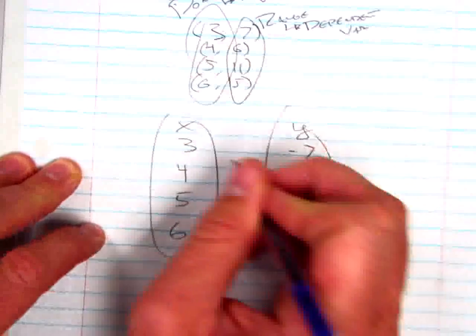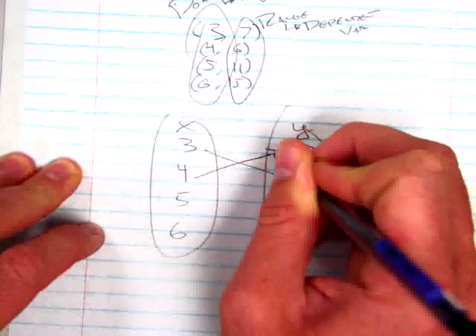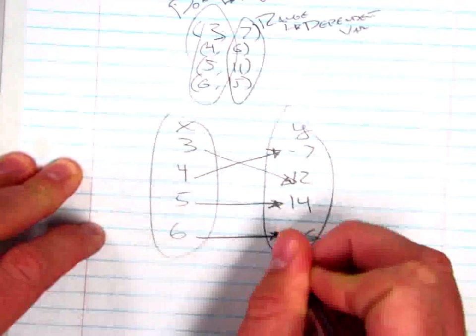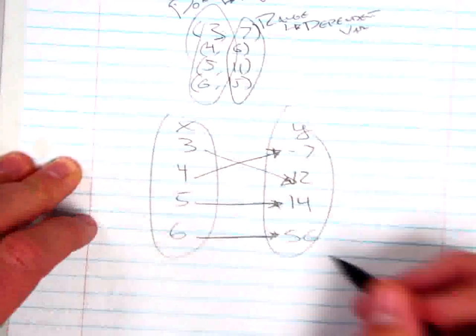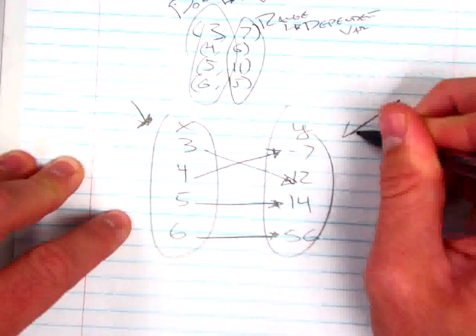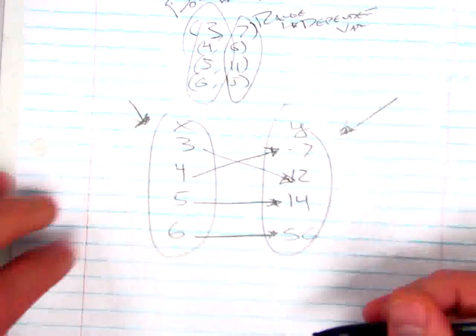And when I throw 3 into the box, out pops a 12. When I throw 4 into the box, out pops a negative 7. 5 gives me a 14, and an input of 6 gives me an output of 56. This will be your domain, all the x values, and then this will be your range, all the y values.